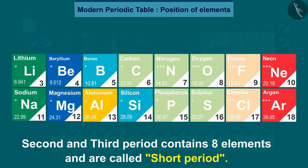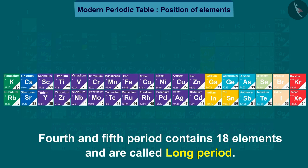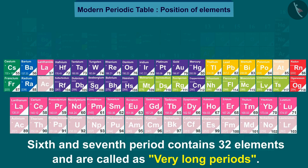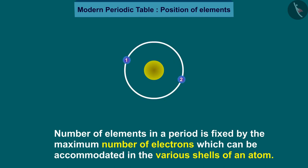Fourth and fifth periods contain 18 elements and are called long periods. Sixth and seventh periods contain 32 elements and are called very long periods. The number of elements in a period is fixed by the maximum number of electrons which can be accommodated in the various shells of an atom.